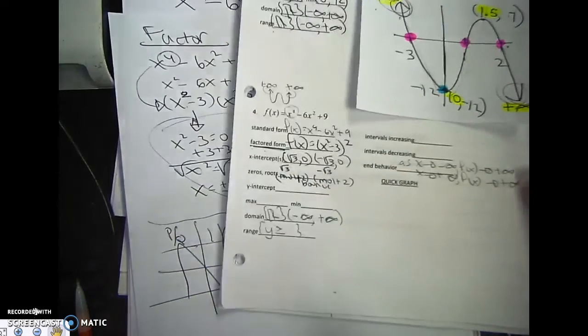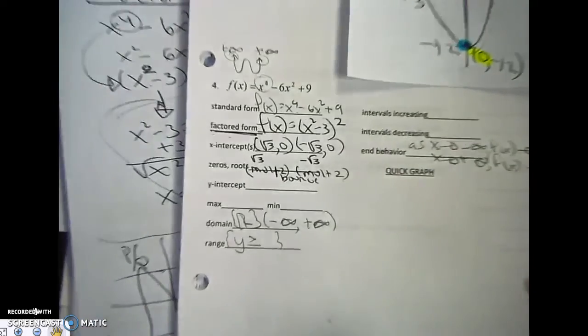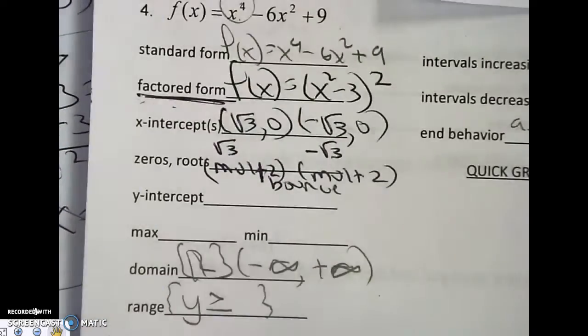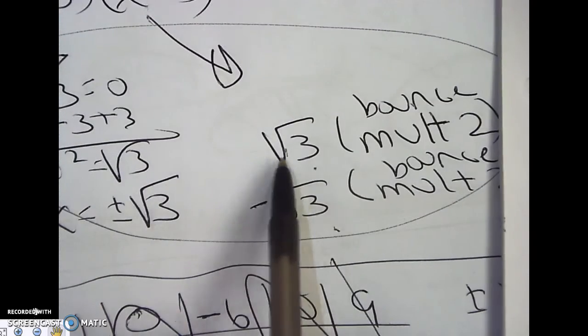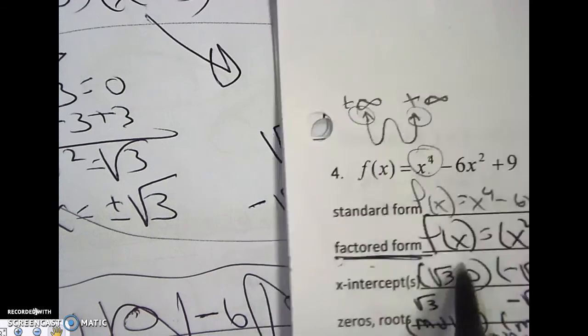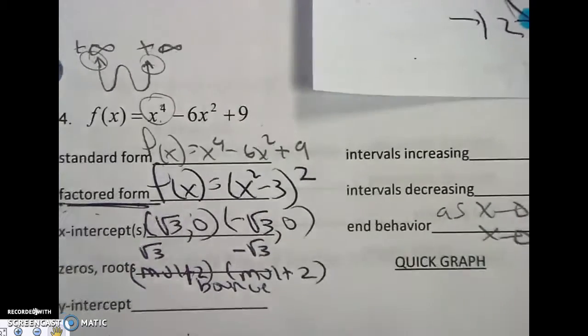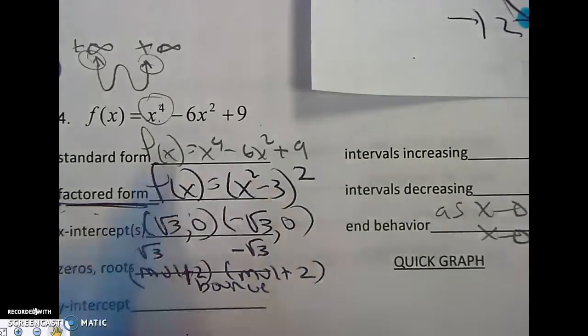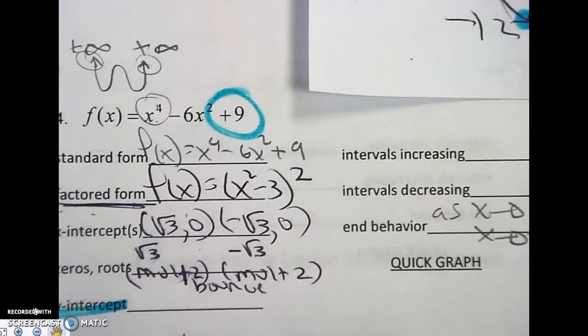My roots are rad 3 multiplicity 2 and negative rad 3 multiplicity 2, which means they both bounce. So x-intercepts, rad 3 negative rad 3, but I have to put a 0 and the roots are there. Now the y-intercept, I actually could have done the y-intercept from the beginning. Boom. 0, 9.